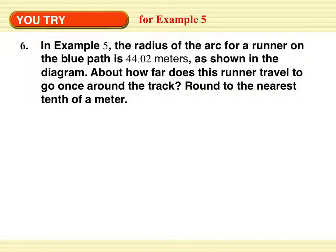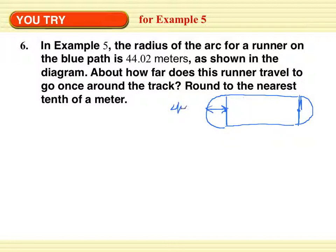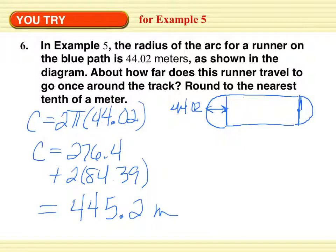The radius of the arc for a runner on the blue path is 44.02 meters. These are also both half circles. The distance around the track on the blue path is 445.4 meters. That's why good runners hug the inside of any lane — their distance is just a little bit shorter.